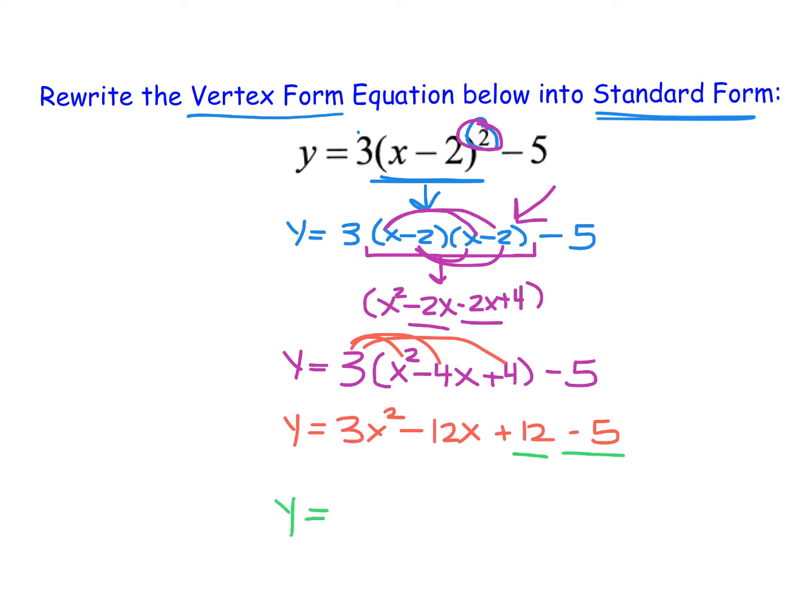my final equation, which will be written in standard form, is 3x squared minus 12x then plus 7 on the end.